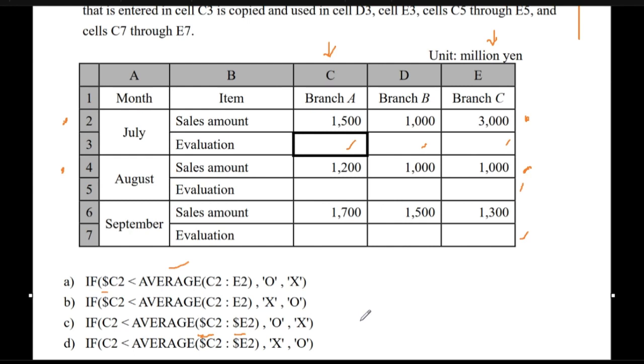So in that sense, which answer would it be? In this case, because we need to put an X mark if the combined average, if the value of the branch is less than the average, so we get an X mark. If the value for the branch is less than the average of the three branches, otherwise we put an O mark.